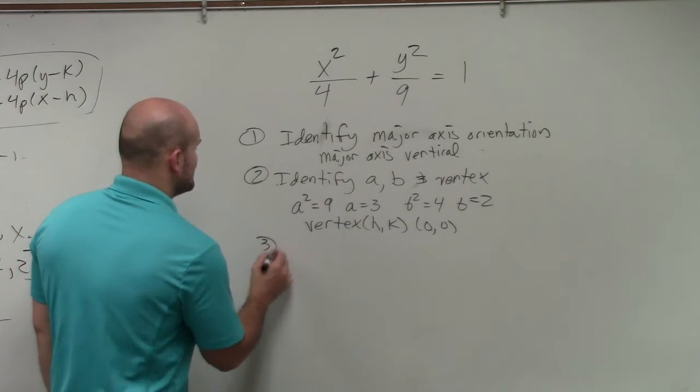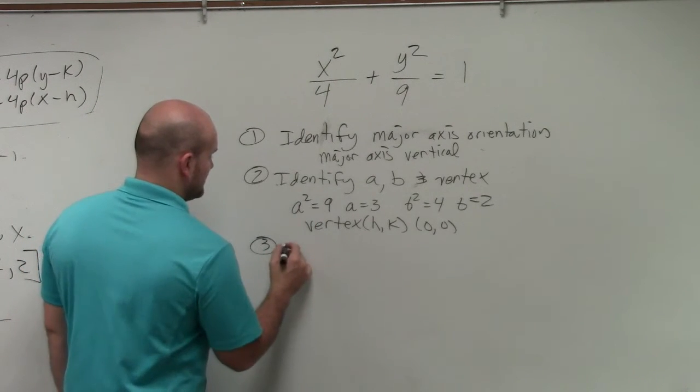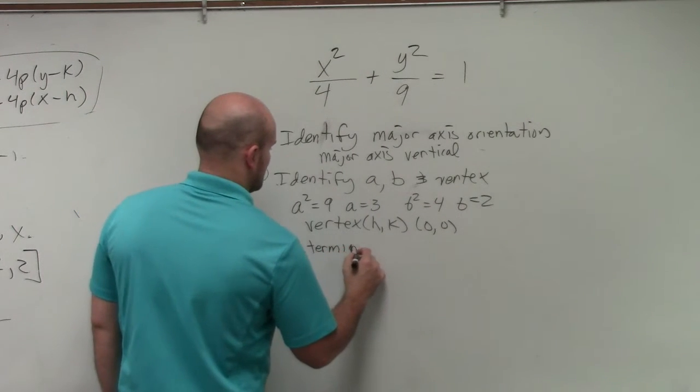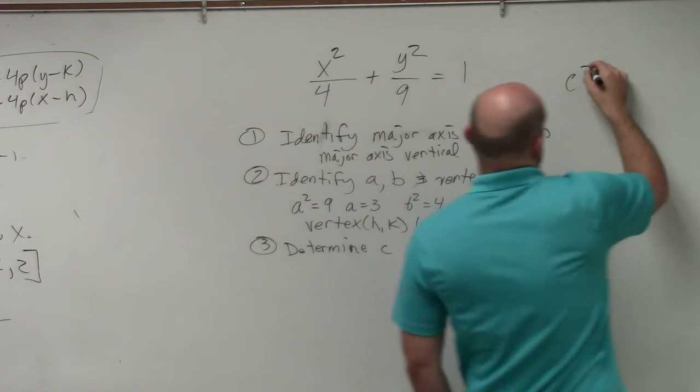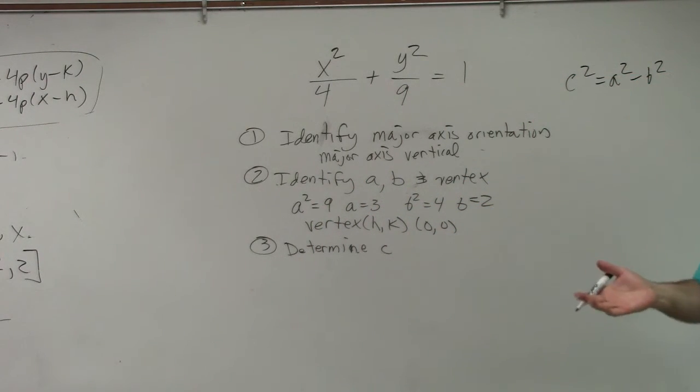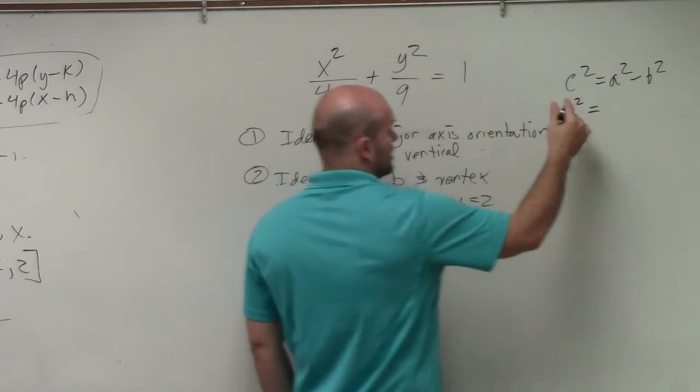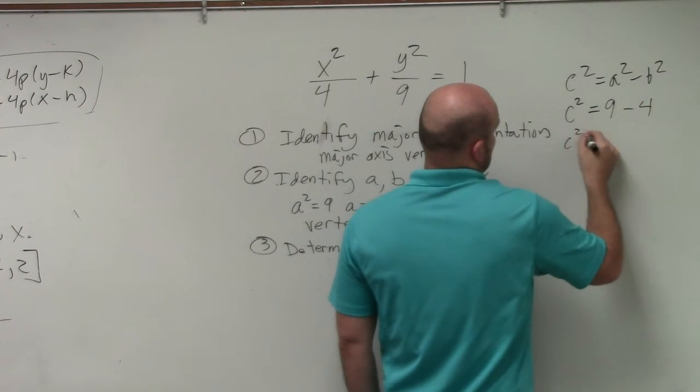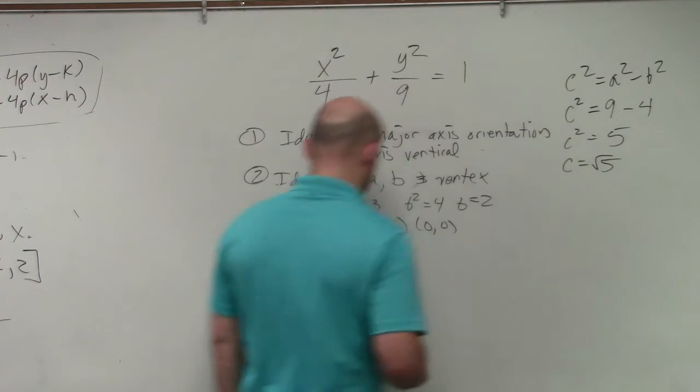Alright. Step number three is to find the missing, if you have any missing value, or I'll just say determine C. So remember, there's that equation that we used. C squared equals A squared minus B squared. And we need to figure out what C squared is. So C squared equals A, which is nine minus four. C squared equals five. C equals the square root of five.